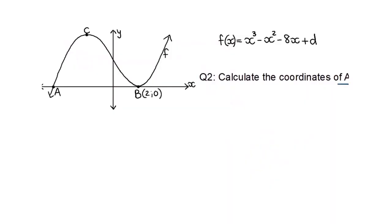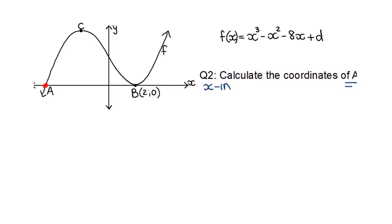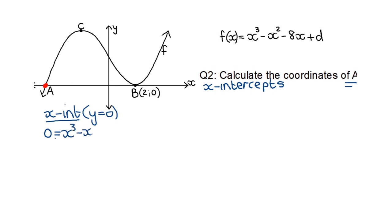The next question asks for the coordinates of point A, which is an x-intercept. To find x-intercepts, I replace y with 0: 0 equals x³ minus x² minus 8x plus D. Now that we know D equals 12, I substitute it in, giving all terms equal to zero. I need to factorize this to solve for x.